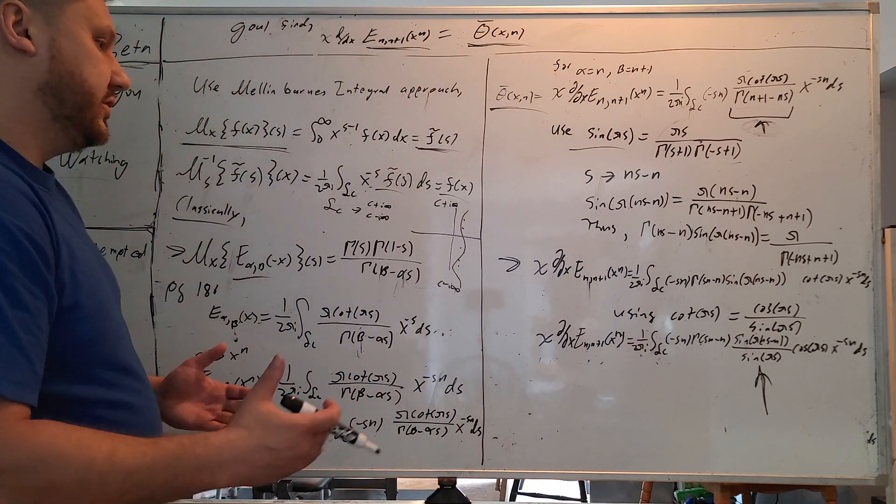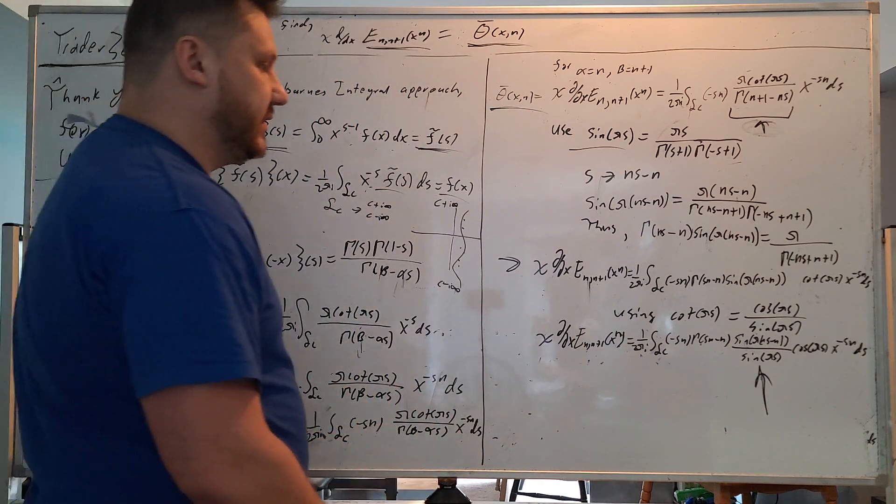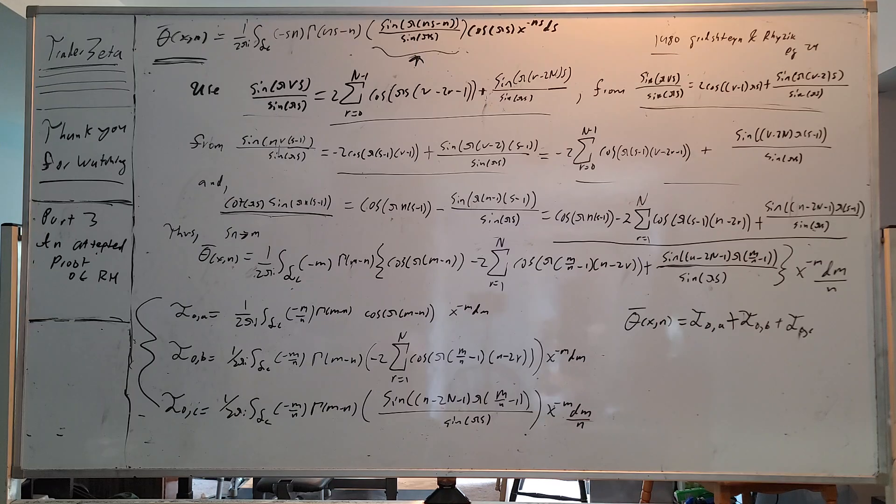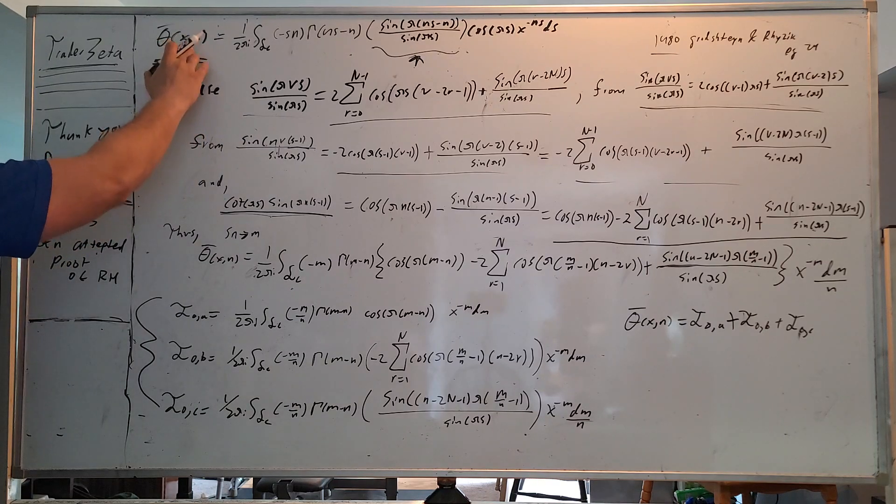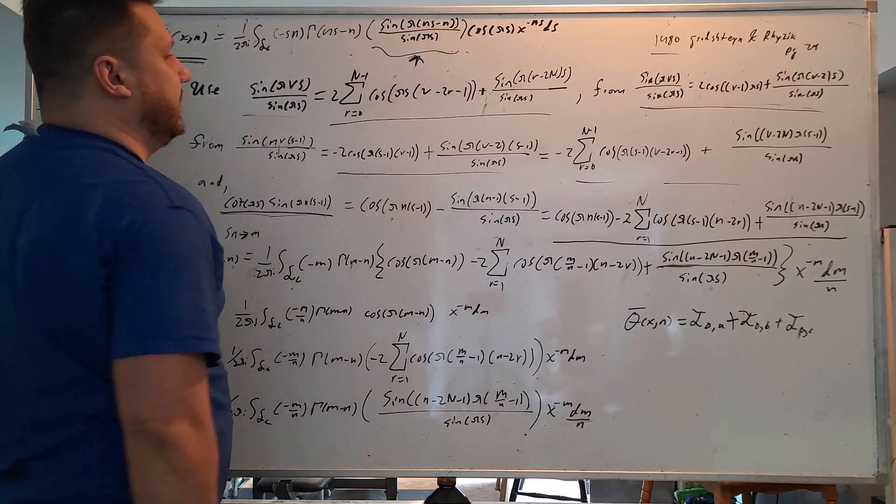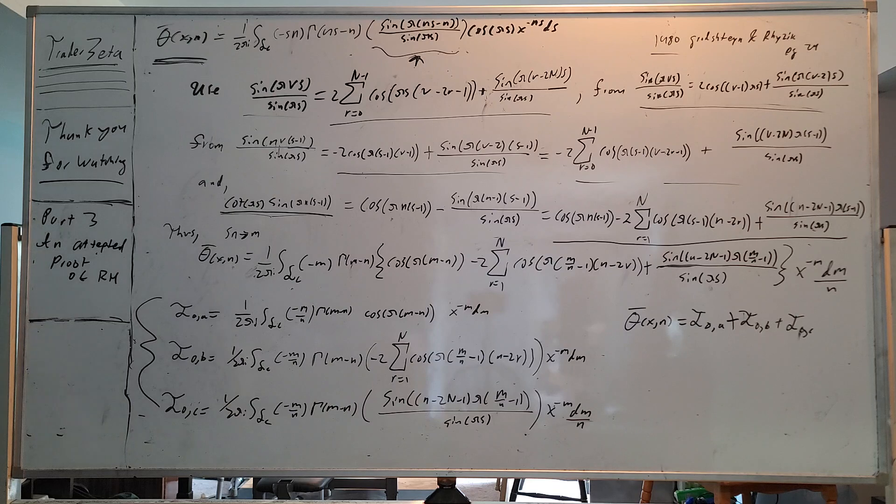So in order to do this, we're going to have to use a whole bunch of trig identities. I'm going to flip the board and we are going to jump right into that. All right. I have just written theta bar of xn right here one more time. Here is the term that we're seeking to investigate.